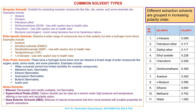Common solvent types. Non-polar solvents are suitable for extracting non-polar compounds like fats, oils, waxes, and some essential oils. Examples include hexane, pentane, petroleum ether, ethyl chloromethane (DCM). Use with caution due to health risks: Chloroform — use with caution due to health risks. Benzene — carcinogen; avoid using benzene due to its hazardous nature.